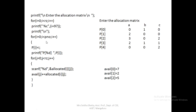After reading the allocation matrix, we read the maximum matrix similarly using nested for loops. We print 'Enter the maximum matrix', print resource labels A, B, C, and for each process P0 to P4, read the maximum values: P0=7,5,3; P1=3,2,2; P2=9,0,2; P3=2,2,2; P4=4,3,3. At the same time, we calculate the initial available (work) matrix: work[j] = instance[j] - avail[j], giving 3,3,2.